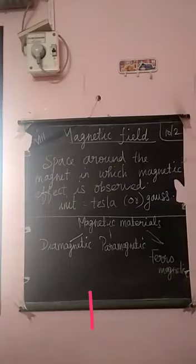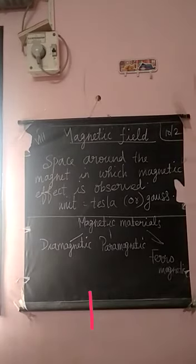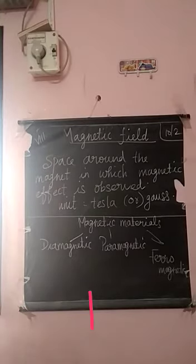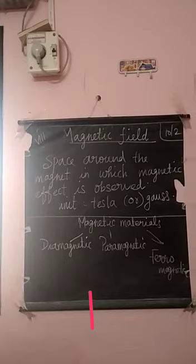Based on the behavior in a magnetic field, materials are classified into three: diamagnetic, paramagnetic, and ferromagnetic. All are magnetic materials, but their behavior in a magnetic field differs. Based on that, magnetic materials are classified into three — diamagnetic, paramagnetic, and ferromagnetic.